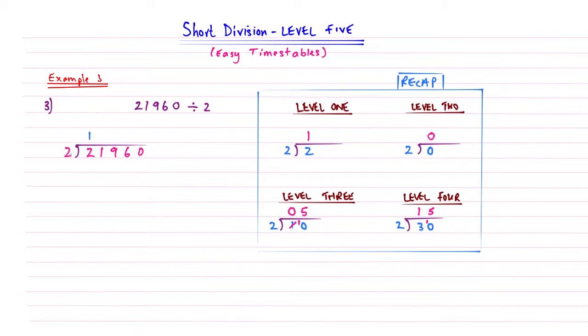So 2s into 2 go once. 2s into 1, well, we don't go because 2 is too big. So it's going to be a 0, then carry the 1. Now we're reading this as a 19. So 2s into 19, well, the nearest number is 18 because 2 times 9 is 18. So it will be 9 times. And then I'm going to carry my 1. Now 2s into 16 go 8. And then 2s into 0. Well, this is a level 2 skill. It doesn't go in, so it's going to be a 0. So 21,960 shared amongst two things is 10,980. And if you're struggling halving things, just use short division. This helps you.